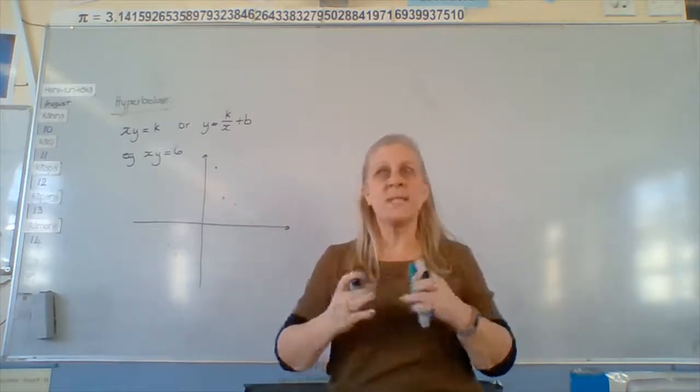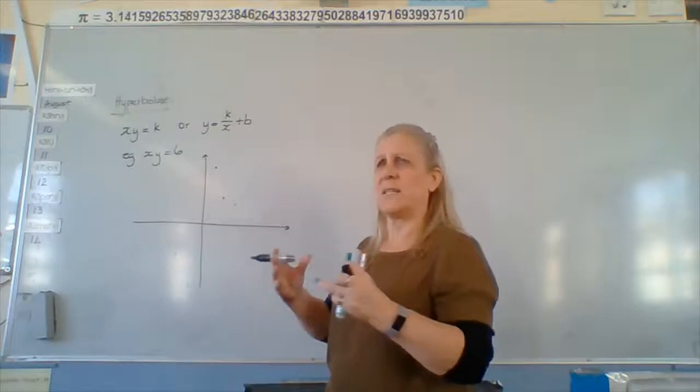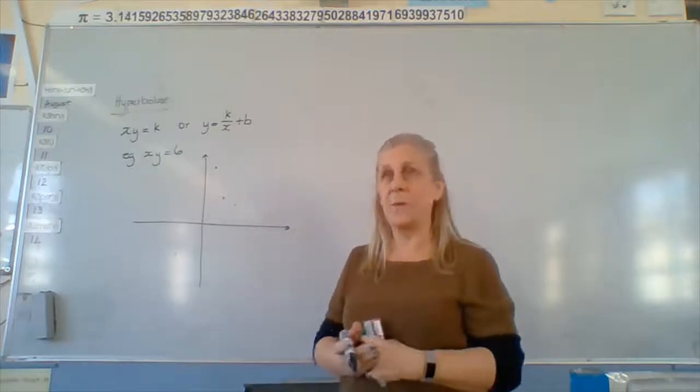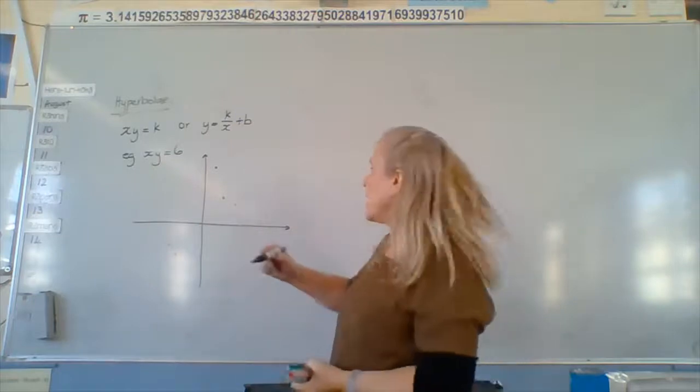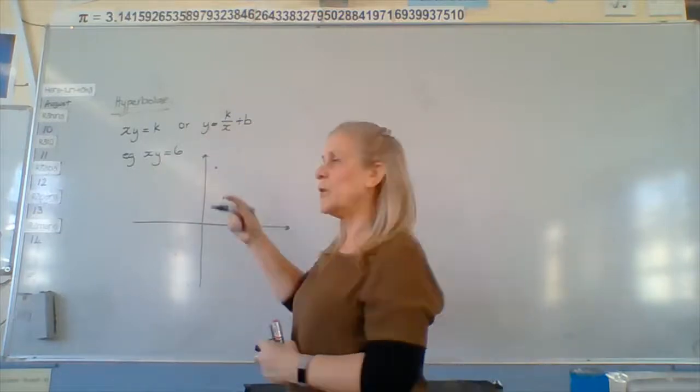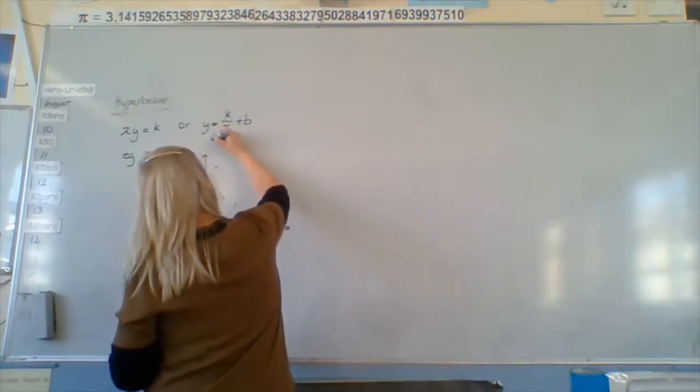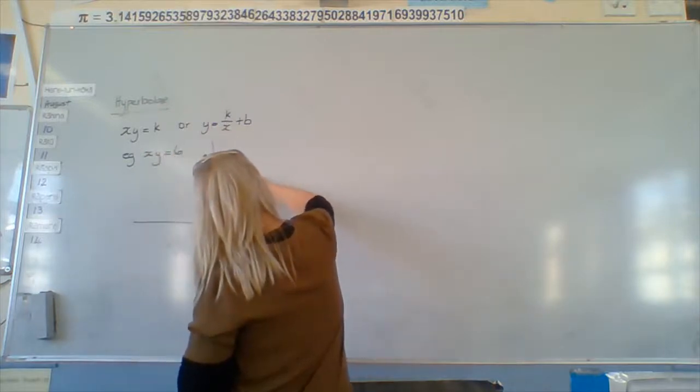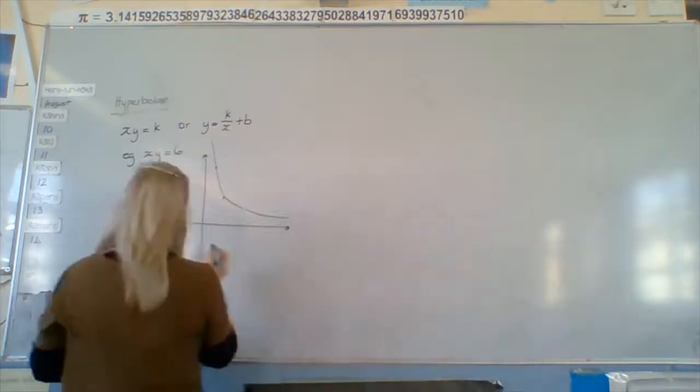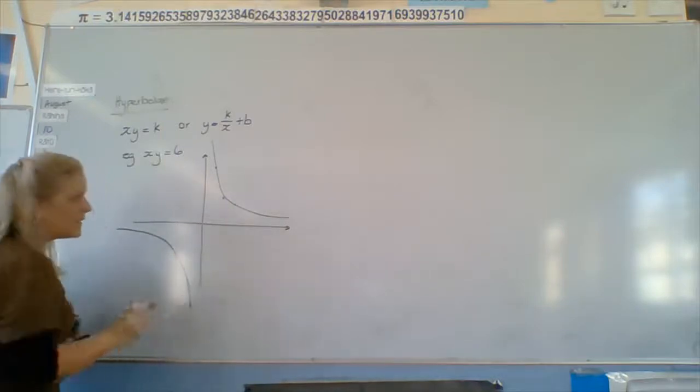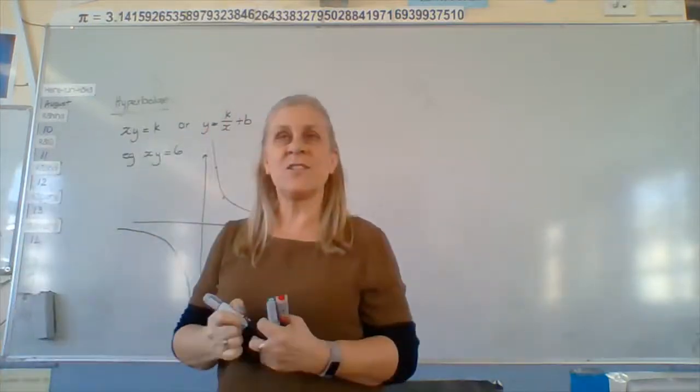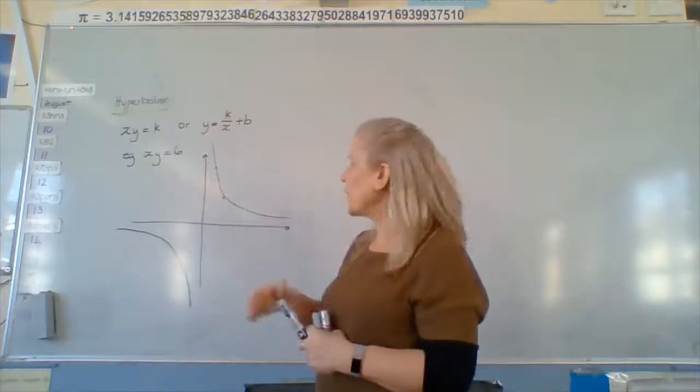All of those numbers, when we find every single one that is possibly capable of the answer being six, form a curve. And it looks like this. And another one in the negative sphere. So that's all those answers to that question that you were given, put on a graph.